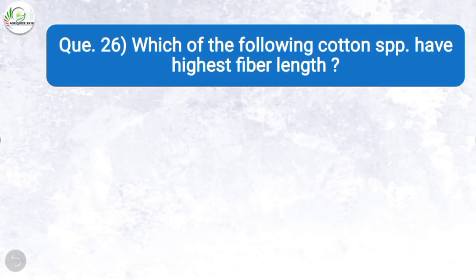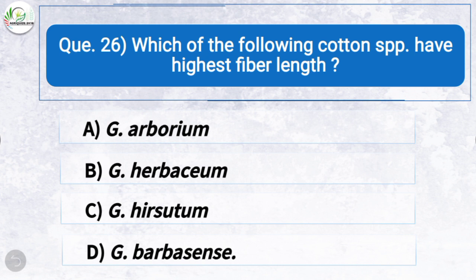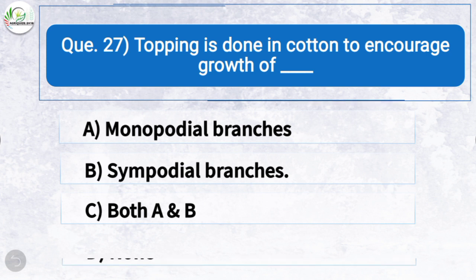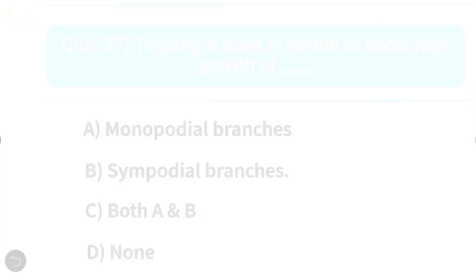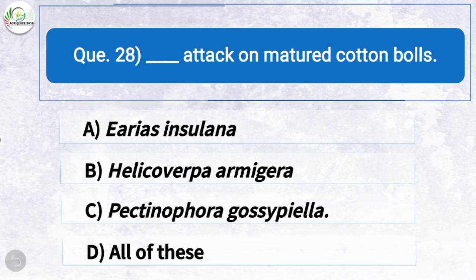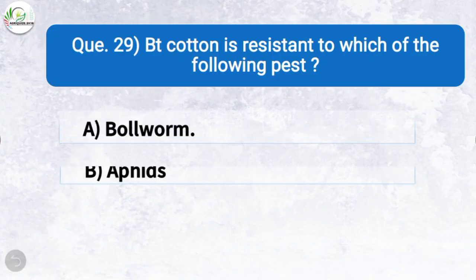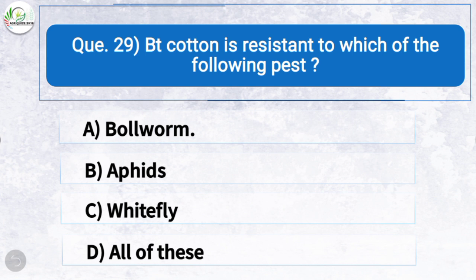Question twenty-six: Which cotton species has the highest fiber length? The correct answer is option D: Gossypium barbadense. Question twenty-seven: Topping is done in cotton to encourage growth of — the correct answer is option B: sympodial branches. Question twenty-eight: Which pest attacks matured cotton balls? The correct answer is option C: Pectinophora gossypiella. Question twenty-nine: BT cotton is resistant to which pest? The correct answer is option A: ball worm.